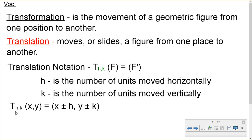So here we have T, H, K, and here's our coordinate X, Y. The X is either going to be increased or decreased by a certain number of units, and the Y is going to be increased or decreased by a certain number as well. So that way it slides around the grid.